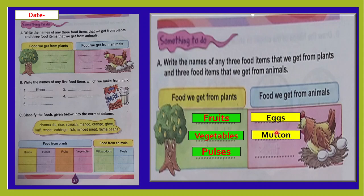Food we get from animals: eggs, mutton, and chicken. So you can fill up this whole section.